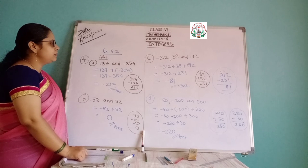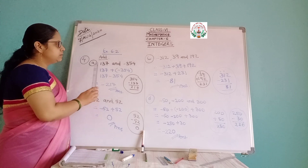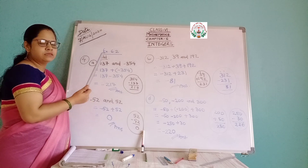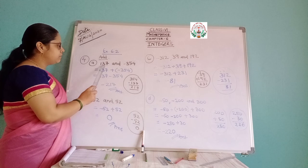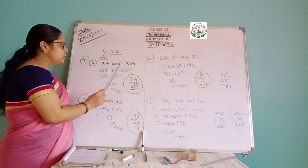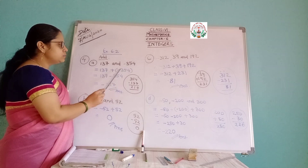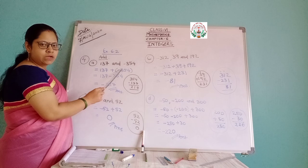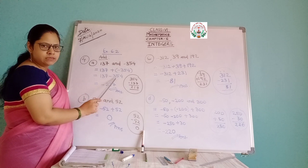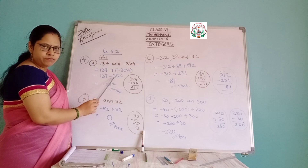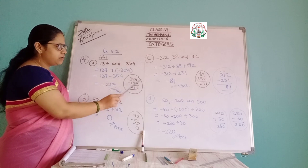Coming to Question 4: find the sum of the following. Addition you have to do. Two numbers are given in some parts, three in others. Where the word 'and' is written, you write a plus sign. For negatives, use a bracket. Part A: 137 and minus 354. Write plus in place of 'and', use bracket for negative. Plus and minus — different sign — minus. Operation is subtraction. Subtraction gives 217. Greater number is 354 with minus sign — so the answer is minus 217.